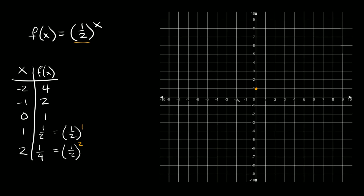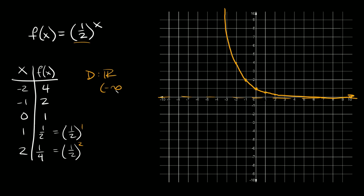Let's plot the points: (-2, 4), (-1, 2), (0, 1), (1, 1/2), and (2, 1/4). Connecting the dots gives us our decay curve. Pretend it doesn't touch the x-axis, because we have our asymptote. The domain is all real numbers, or from negative infinity to positive infinity, and the range is y greater than 0.